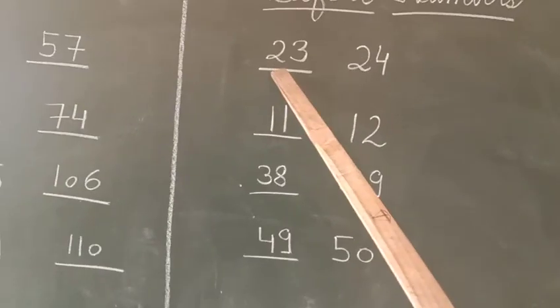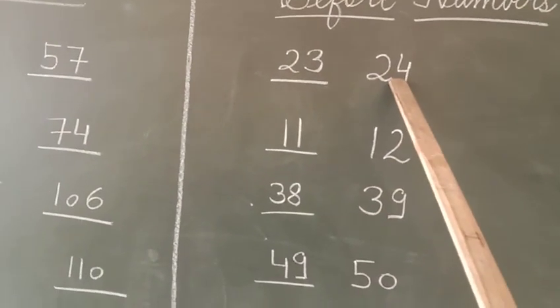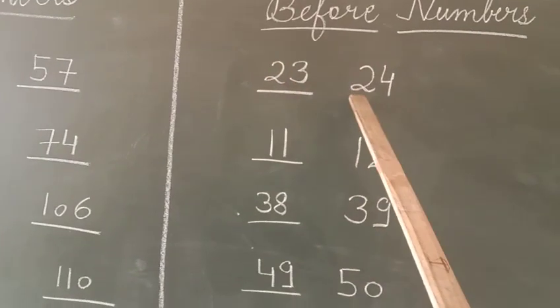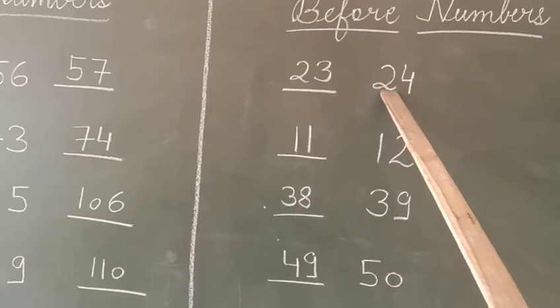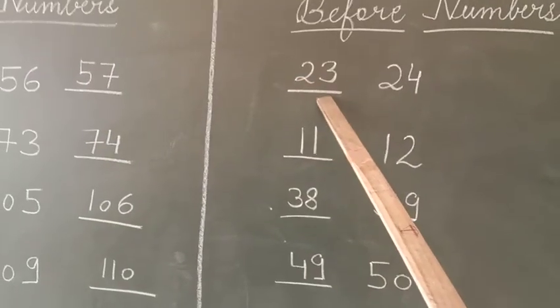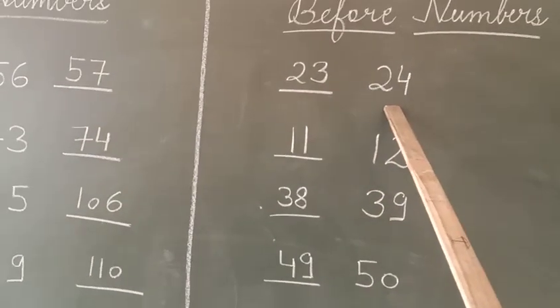So it has been written 24. We have to write the before numbers, means the number that comes before 24. Which number comes before 24? 23. Very good. 23 comes before 24.